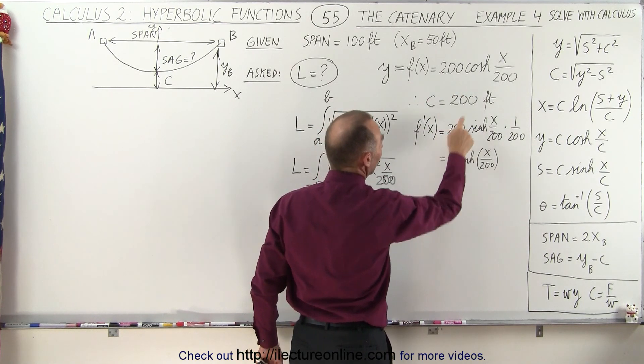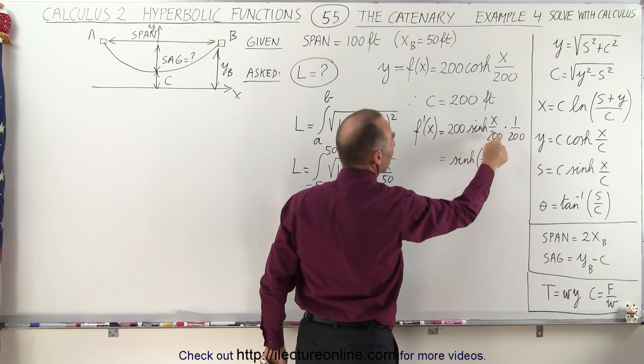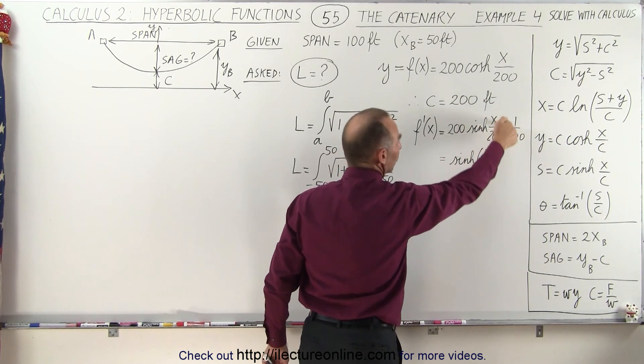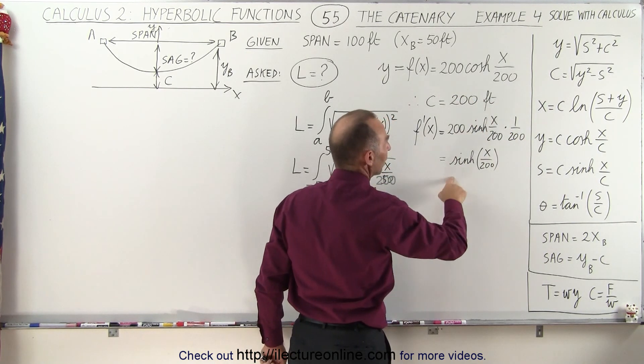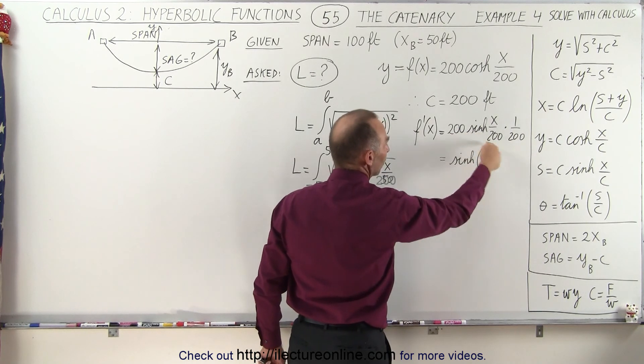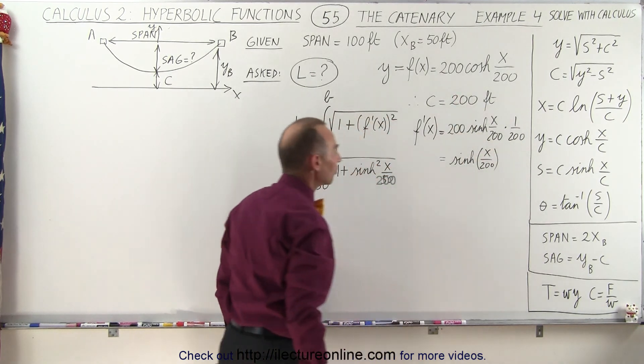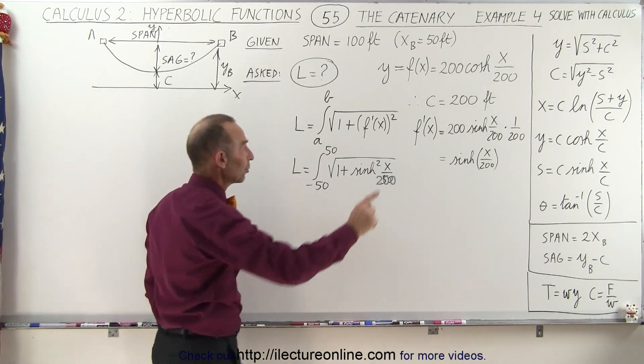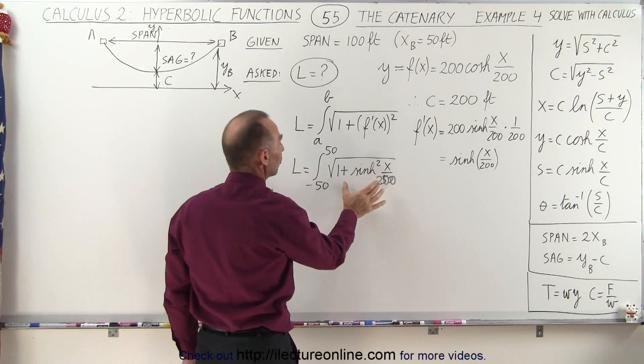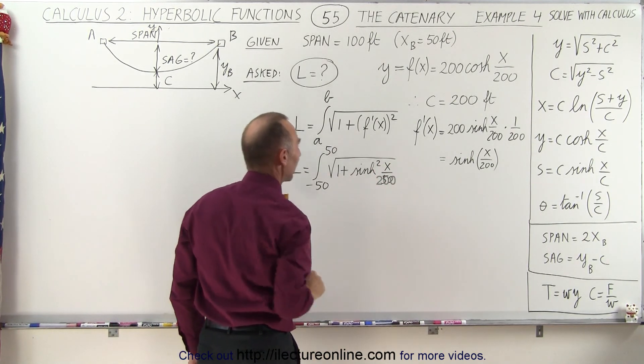That would be 200 times the hyperbolic sine of x over 200 times 1 over 200, which is the derivative of x over 200. This will cancel out. So here is the derivative of the original function. When we plug that into our equation, it now comes to just solving this integral.